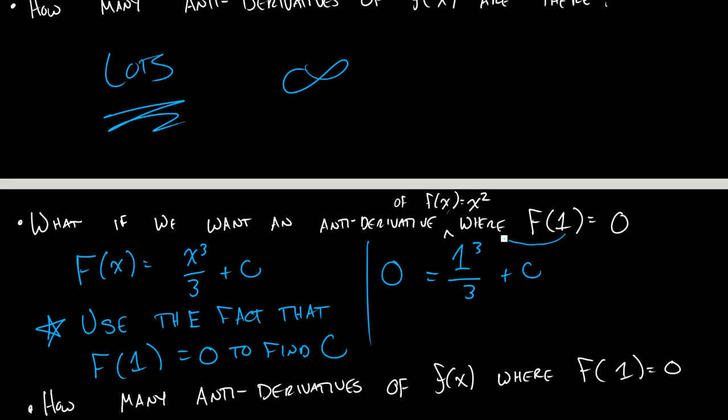So putting 1 in for my input gives me 0 as an output, and that helps me figure out what c is. I'm going to move this 1 third over, and I'll get negative 1 third equals c. So there actually is a specific antiderivative where big F of 1 equals 0, and that is x cubed over 3 minus 1 third. If you plug in 1, you'll get 0 out.